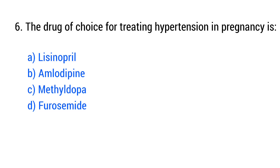Question number 6. The drug of choice for treating hypertension in pregnancy is? The right answer is option C: Methyldopa.